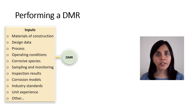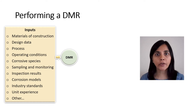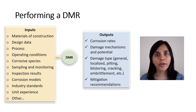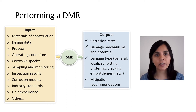The DMR takes into consideration a wide variety of information. This includes the materials of construction, design data, process information including normal operating conditions and non-standard operations such as unit shutdowns and cyclic service, along with corrosive species, results of sampling and monitoring, historical inspections, any corrosion models that are available, and industry standards. All of this information is analyzed by an experienced and trained corrosion specialist to determine the expected corrosion rates, potential damage mechanisms, the damage potentials, and the type of damage expected. Mitigation recommendations may also be made at this time.